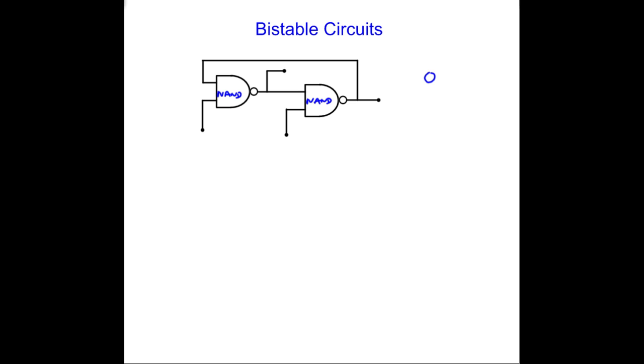And the truth table for a NAND gate, which we should know, looks something like this. 0, 0 is going to give me 1, so is that, so is that, so is that, and 1, 1 gives me 0.